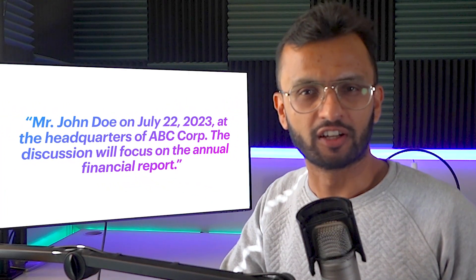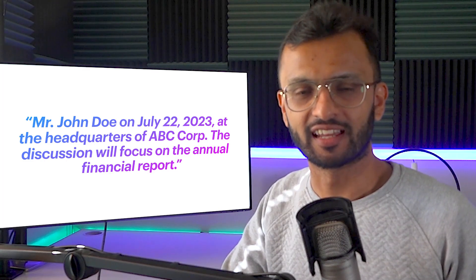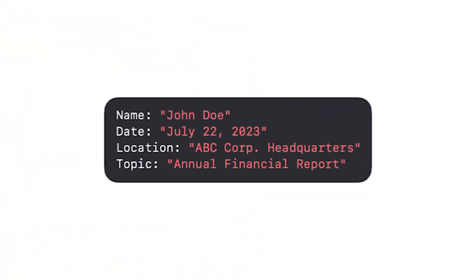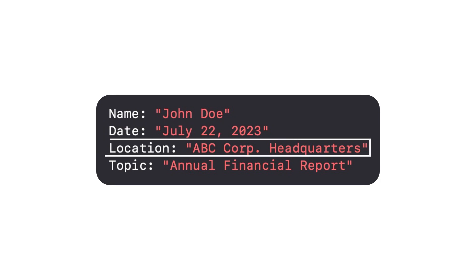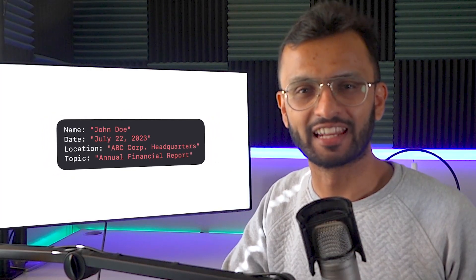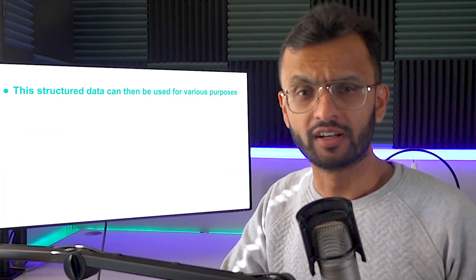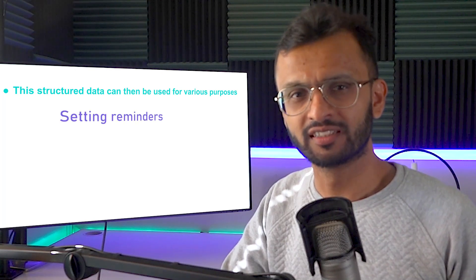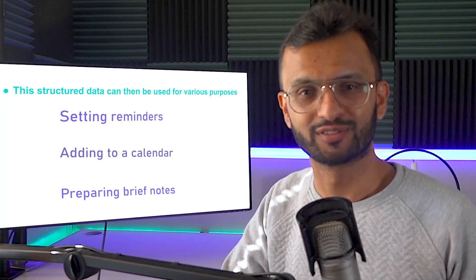An AI model with function calling capabilities can extract structured data like this: name is John Doe, date is July 22, 2023, location is ABC Corp headquarters, and topic is the annual financial report. This structured data can be used for various purposes such as setting reminders, adding to your calendar, and preparing brief notes.